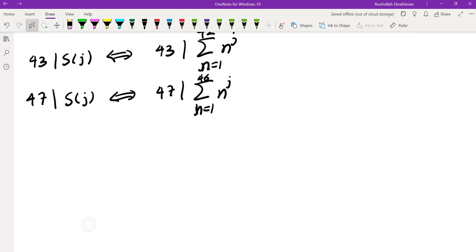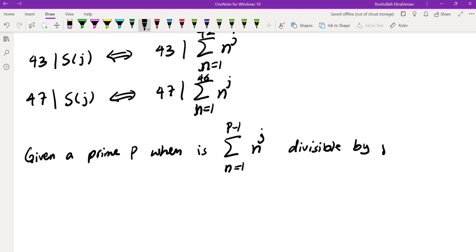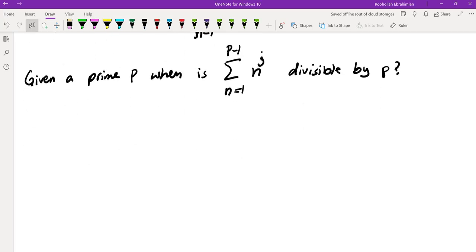So in other words, we need to answer this question: Given a prime P, when is the sum of n^j from n = 1 to P-1 divisible by P? This is something I had actually seen before this competition, so I knew how to solve this one.